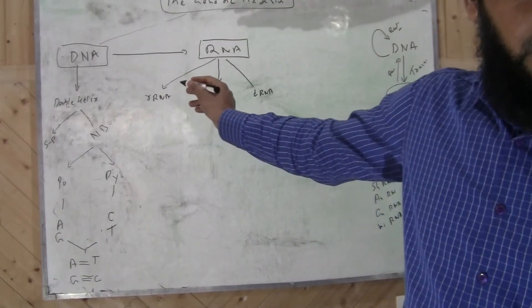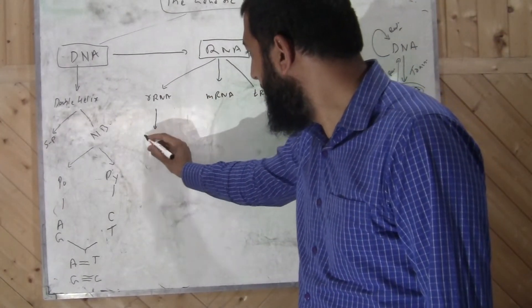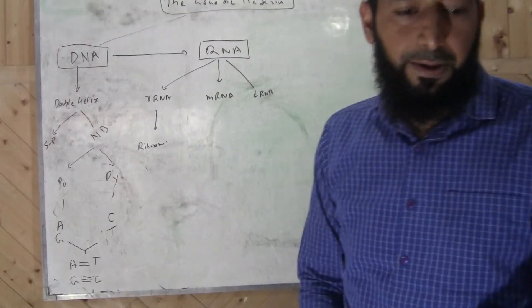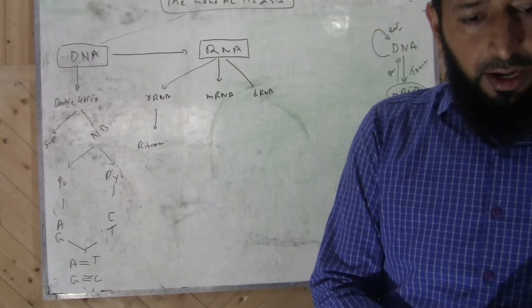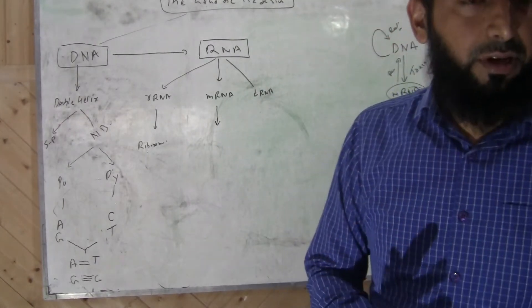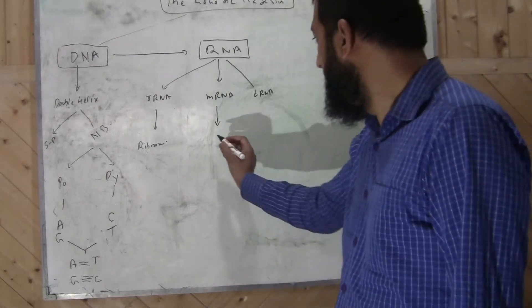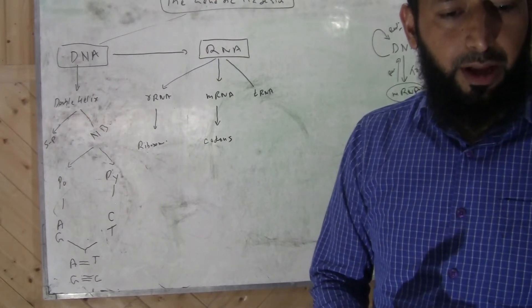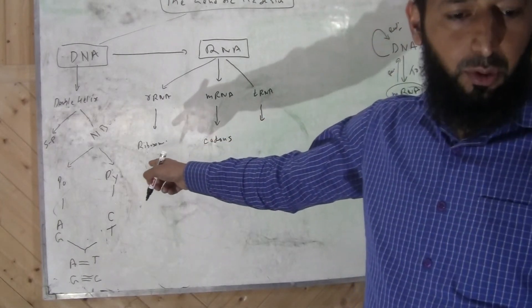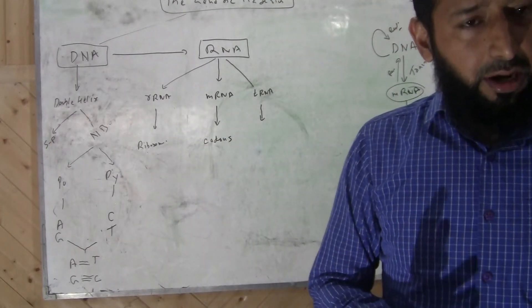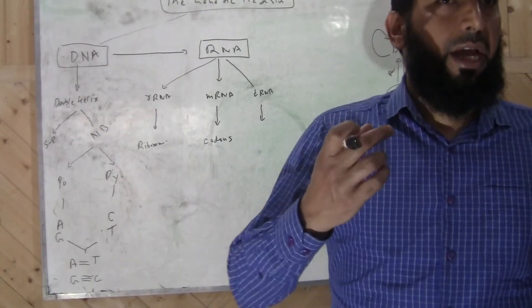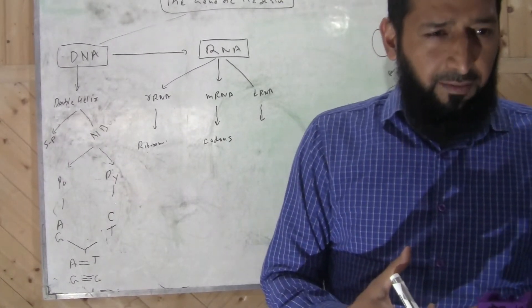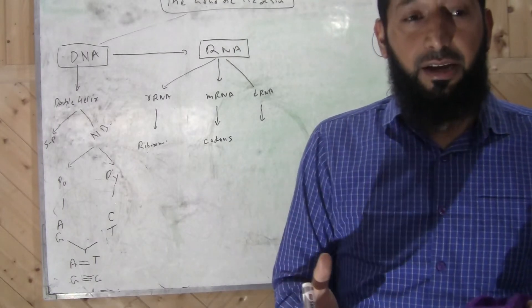So your ribosomal RNA is a component of ribosomes, and your messenger RNA—this is the main expressive part. It's made up of codons. And your tRNA helps in the protein synthesis. And there are 20 types of tRNAs because there are 20 types of amino acids. And each tRNA combines with one amino acid with the help of aminoacyl-tRNA synthetase. So there are 20 types of aminoacyl-tRNA synthetases also.